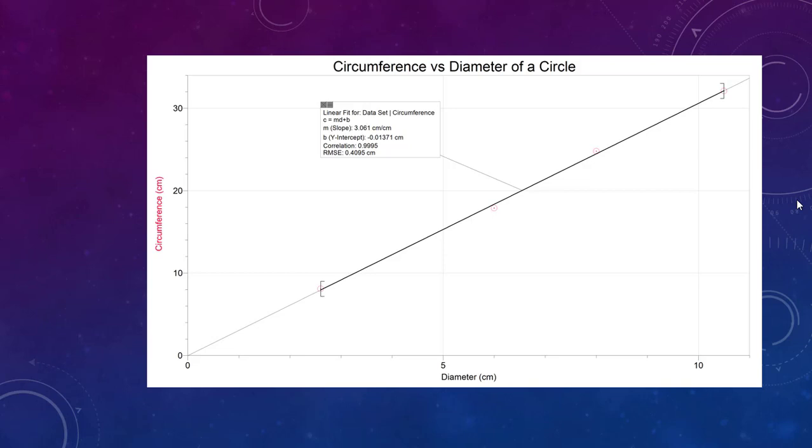After plotting our data we get a best fit line that looks pretty linear to me and we have a few ways that we can describe this in words. A linear line means that there is a constant rate of change between the two variables. So we can say that this is a constant relationship.